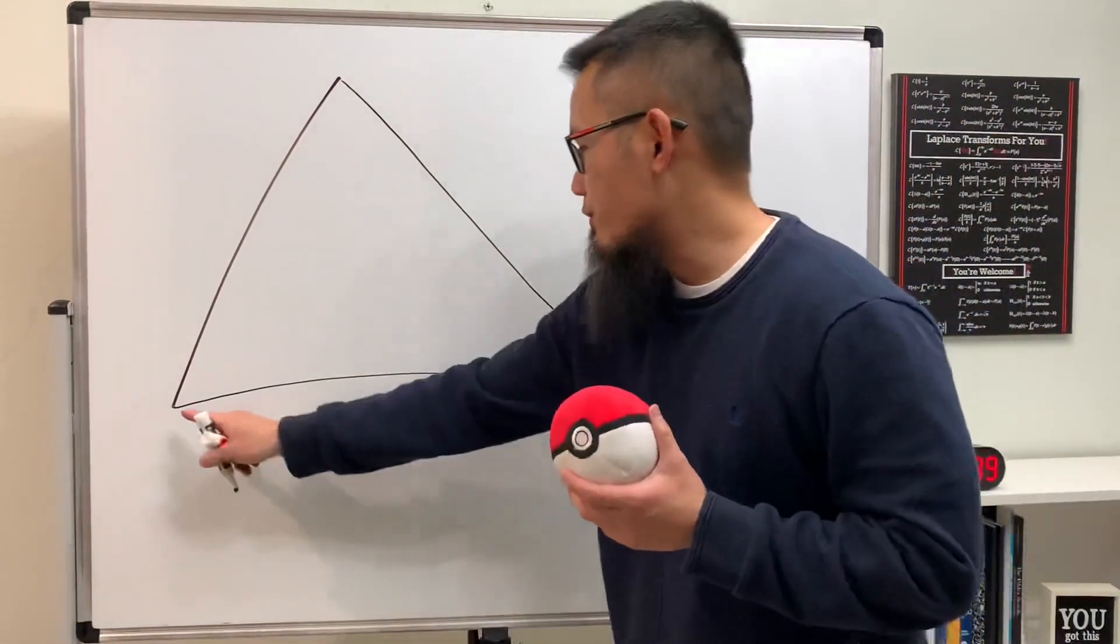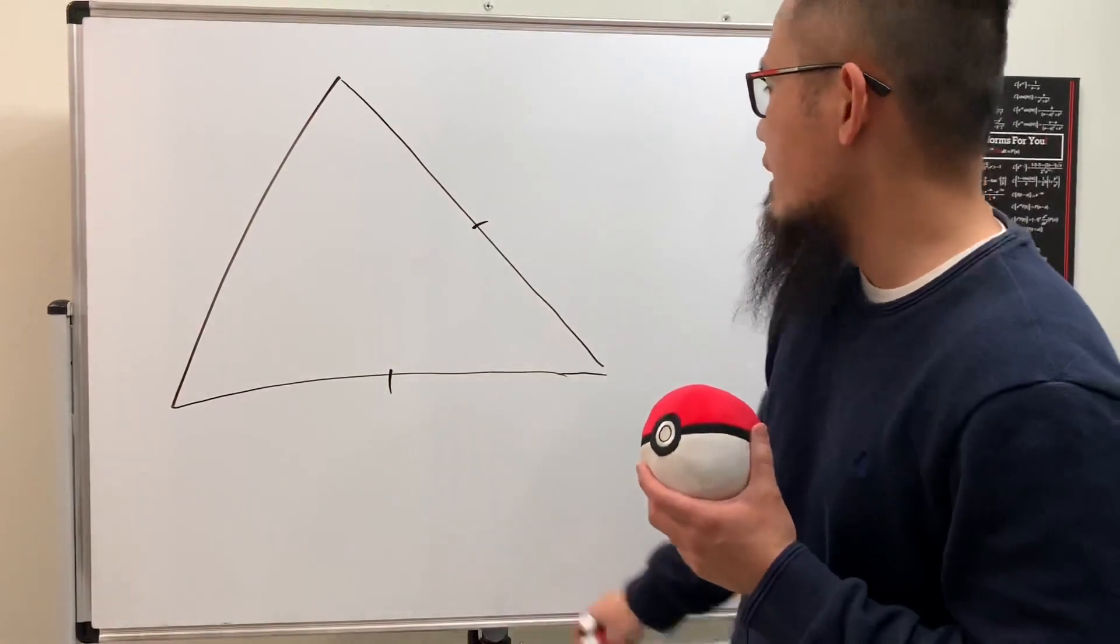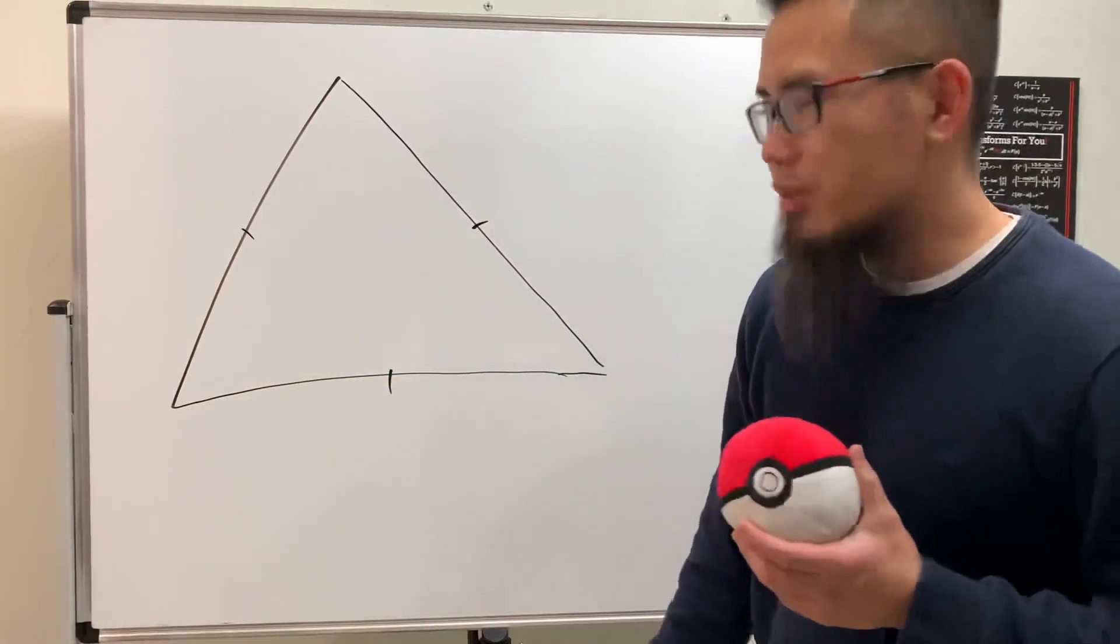What you want to do next is find the midpoint of each side. So the midpoint is probably right here, and then the midpoint is probably right here, and the midpoint is probably right here.